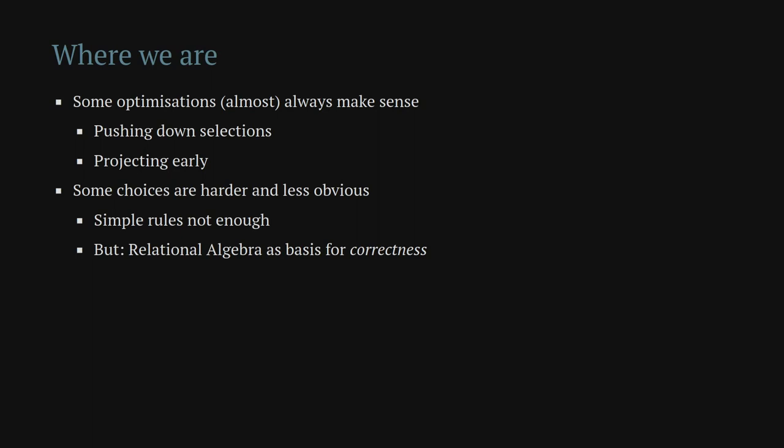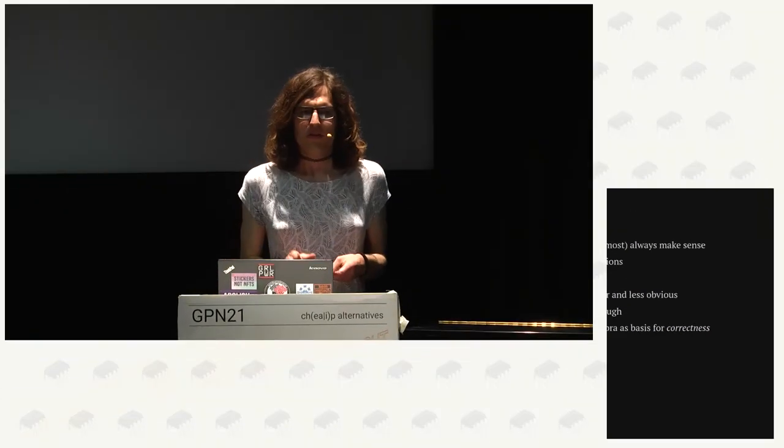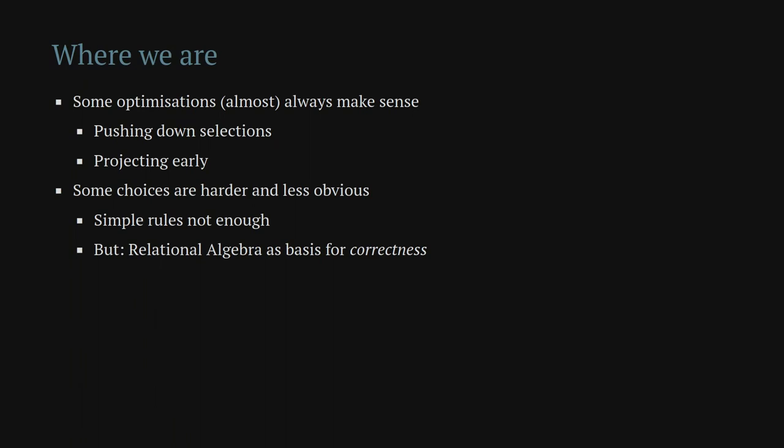So where are we? There are a few optimizations that pretty much always make sense, like pushing down selections as early as possible, or projecting early — because that pretty much always decreases the set sizes. But there are other choices where it's harder to say which is better, and simple rules like 'always push down selections' aren't enough. What we've looked at from relational algebra is still useful as a basis for correctness: the worst thing we could do is change something and end up with an incorrect result. Relational algebra tells us which changes are valid and which aren't.